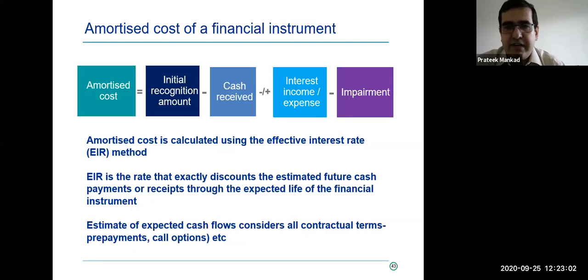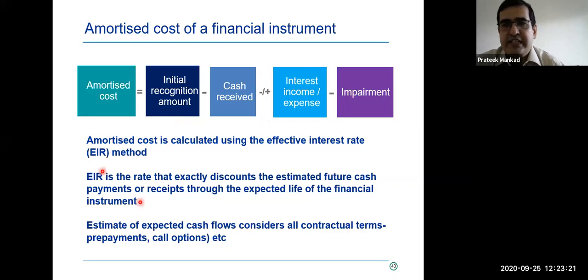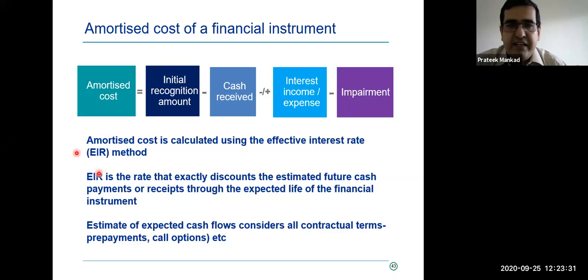To summarize the effective interest rate method concept: amortized cost is the amount on initial recognition, minus cash you receive, plus interest income or expense. That's the amortized cost. EIR is the rate that exactly discounts future cash receipts and payments through the expected life — simply put, this is the IRR, something we would all be familiar with.